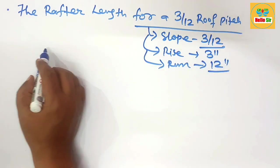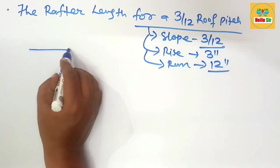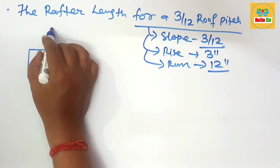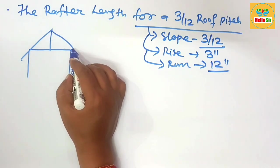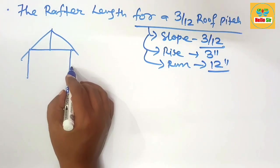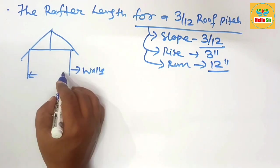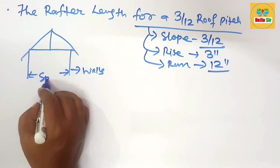First we'll make a rough diagram to understand the roof frame structure and the common length for rafter. This is the roof framing house and these are the supporting walls.